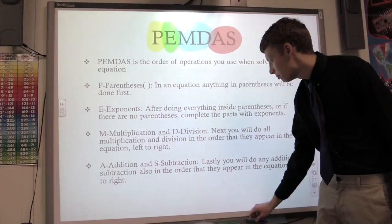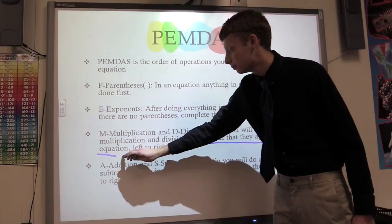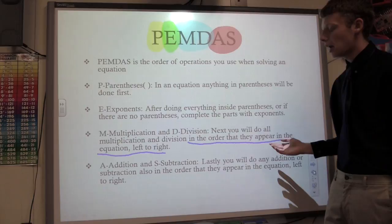Next, highlighted in blue are the M and the D. Now the reason they're highlighted in the same color is because you do them in the order they appear in the equation, from left to right.